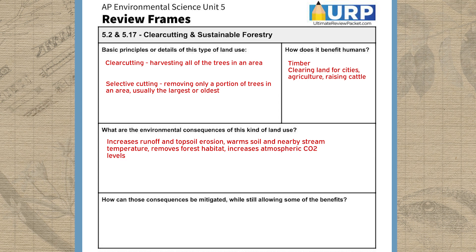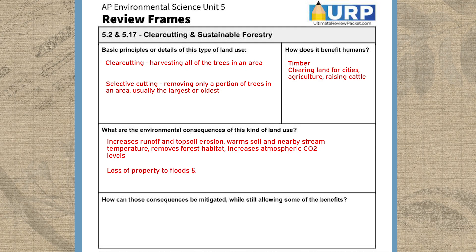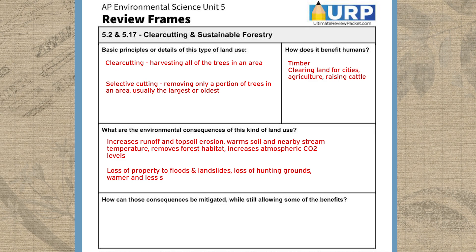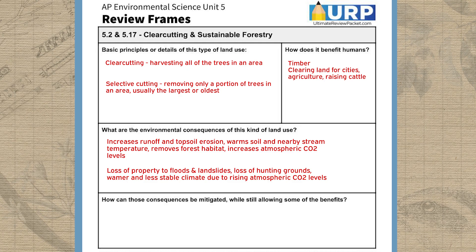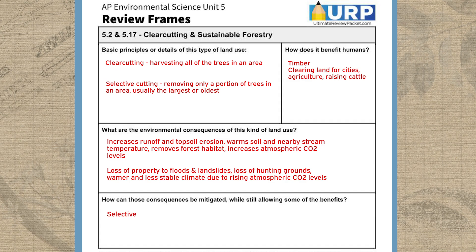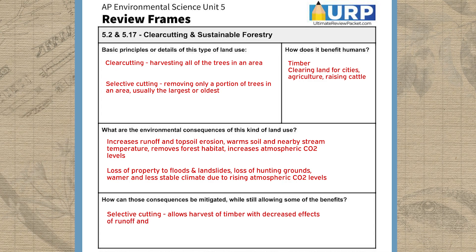What problems does clear cutting possibly create for humans? We may lose property to floods or landslides that result. We may not be able to hunt animals for food that lost their habitat due to deforestation. And we may experience a warmer, less stable climate with more carbon in the atmosphere. Finally, what solutions do we have to still get the benefits of cutting trees down without as many of the problems? The most obvious is selective cutting, which allows us to still take some timber from a forest without making it so likely to experience increased runoff and erosion, habitat loss, and increased soil and stream temperature.